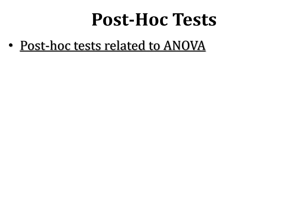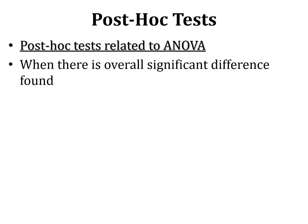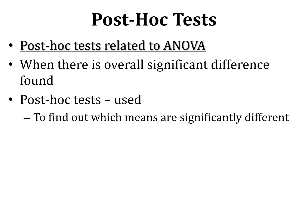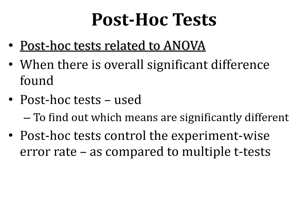Post hoc tests are performed when an overall significant difference is found, to identify which means are significantly different. An advantage of post hoc tests is that some of them control the experiment-wise error rate, as compared to performing multiple t-tests where the error rate is very high. Some post hoc tests do not control the experiment-wise error rate, but others actually do, allowing you to perform comparisons without fear of inflating type 1 error.